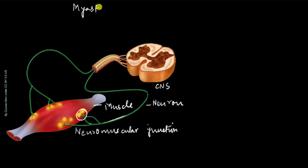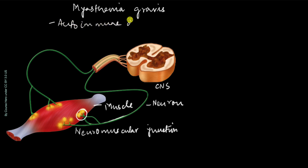In a disease called myasthenia gravis, the neuromuscular junction is attacked by our own antibodies — so that is an autoimmune disorder. Our antibodies go and attack the neuromuscular junctions. Do you remember what happens there? The nerve transmits a signal to the muscle and tells it to contract, so we can contract our muscles and do different kinds of movement.